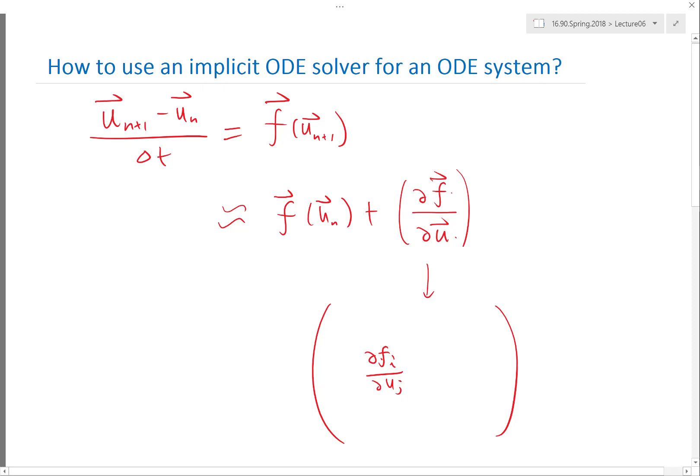So each entry in the matrix is going to be df_i/du_j. And this is going to be df_i/du_{j+1}, etc. This is going to be df_{i+1}/du_j. So each column corresponds to a different u, each row corresponds to a different f.